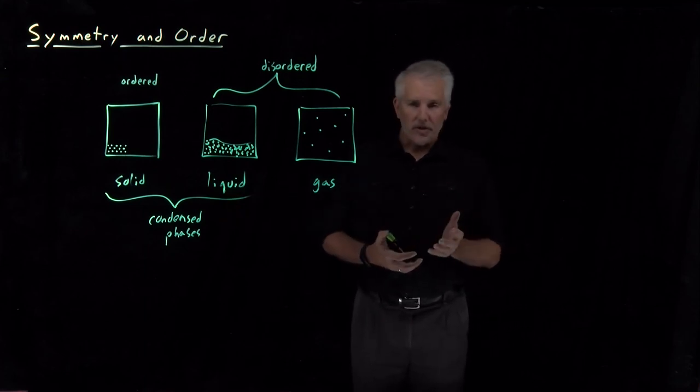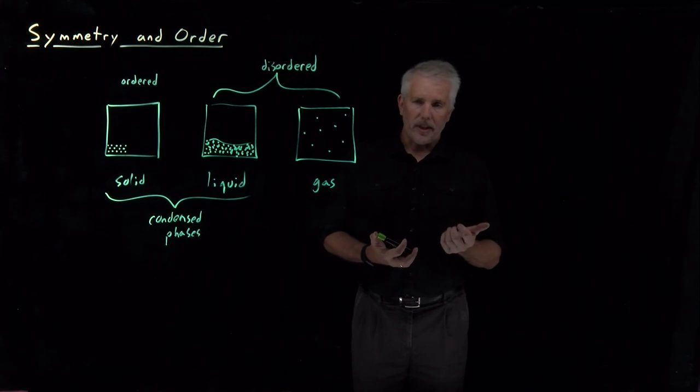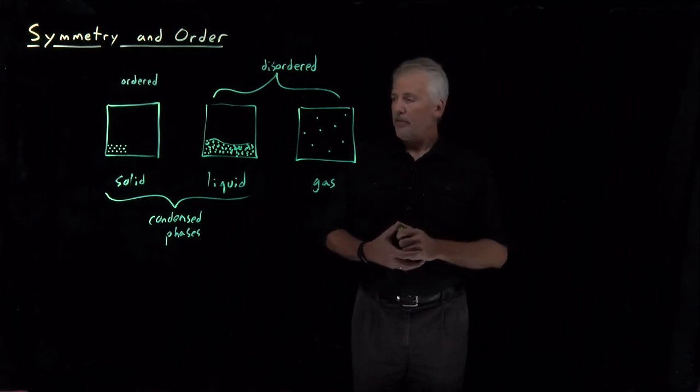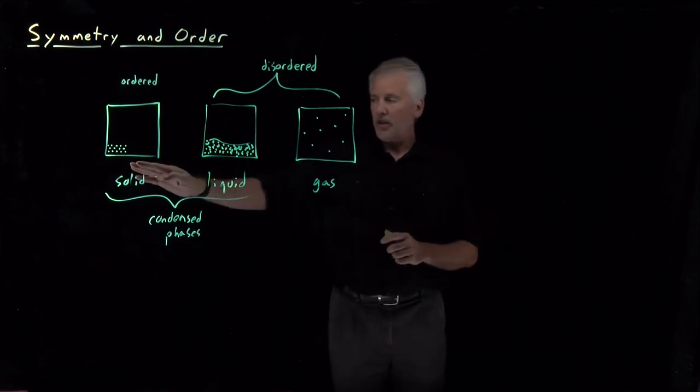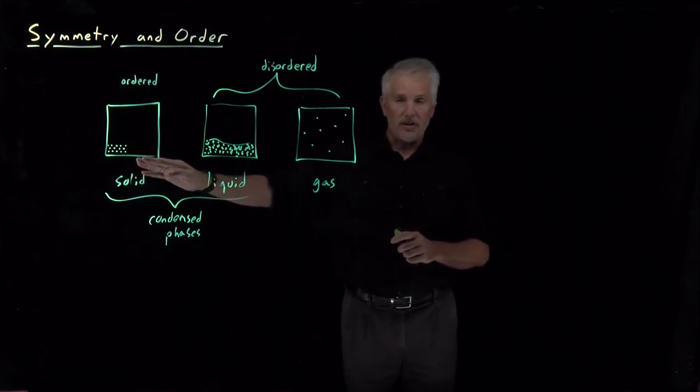I can have translational symmetry or rotational symmetry or reflection symmetry. And we'll need very precise definitions to be able to talk about what exactly do I mean if I say a solid is ordered or a solid is symmetric?